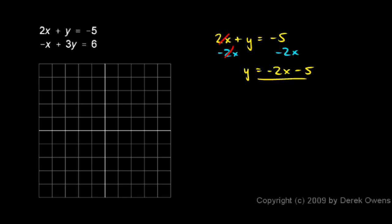That gives me an equation in y equals mx plus b form, which is easy to graph. y equals negative 2x minus 5. Negative 5 is the y-intercept, and the slope is negative 2.